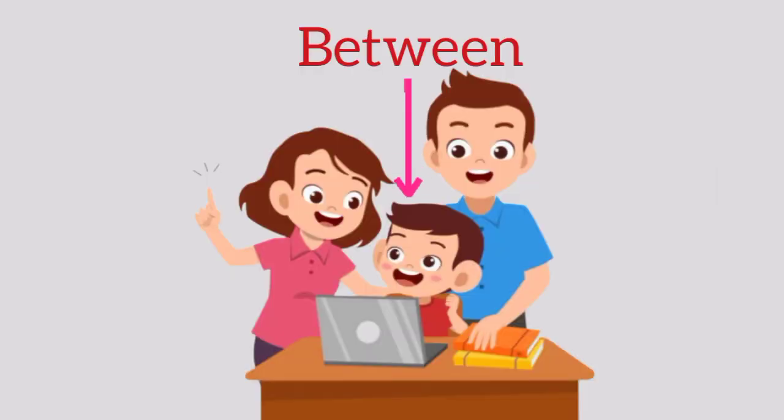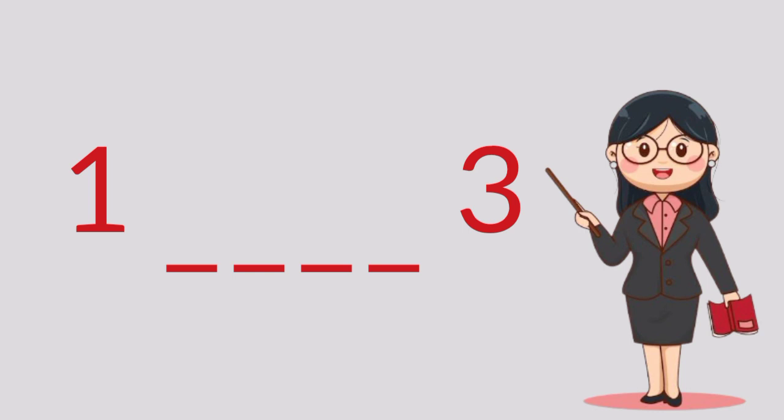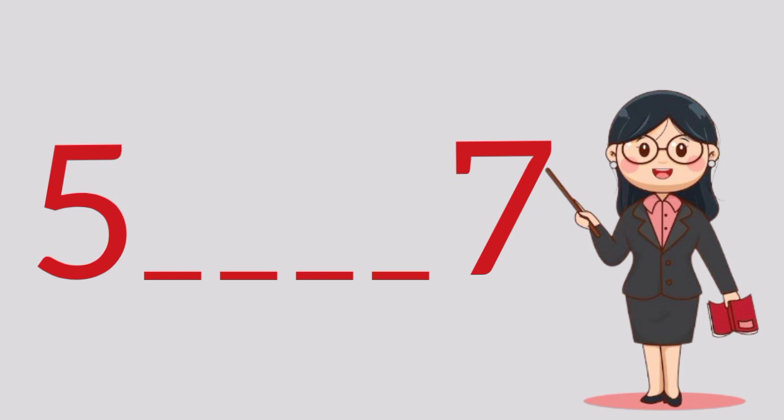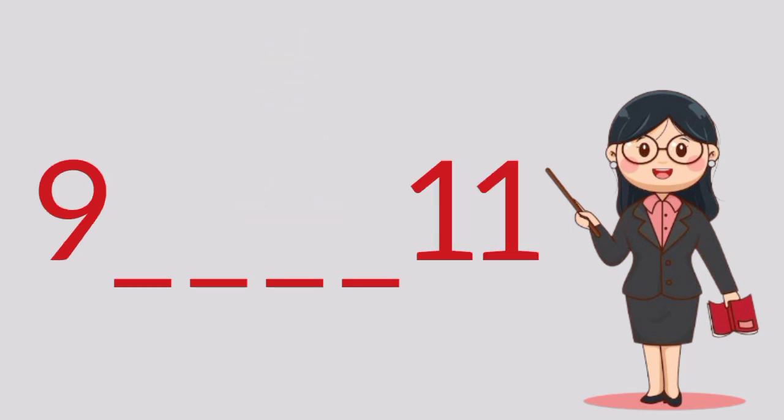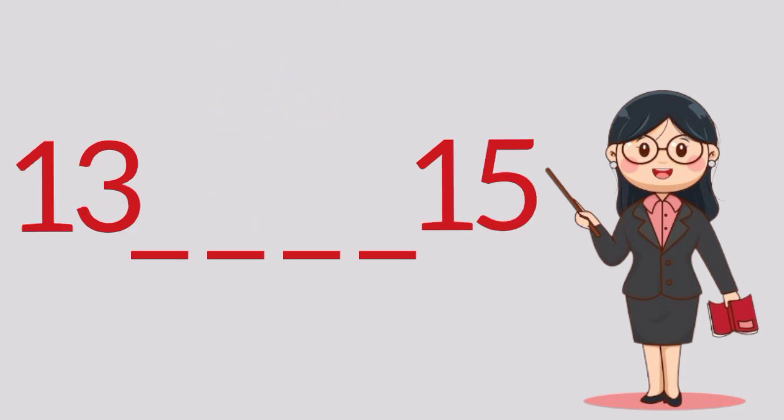So our first numbers are one and three. What number comes between one and three? It's the number two. Our second numbers are five and seven. What number comes between five and seven? It's the number six. Our third numbers are nine and eleven. What number comes between nine and eleven? It's the number ten.